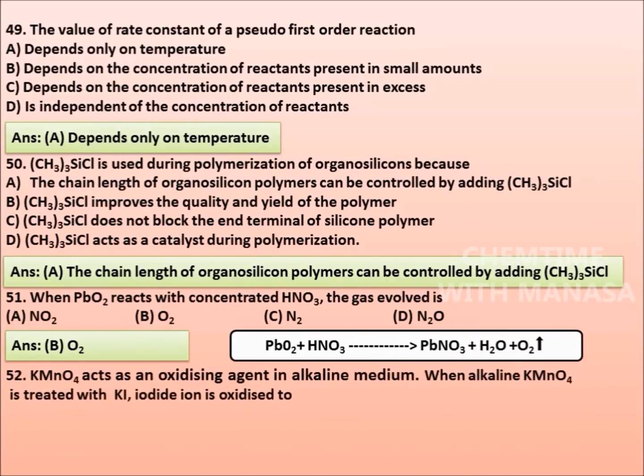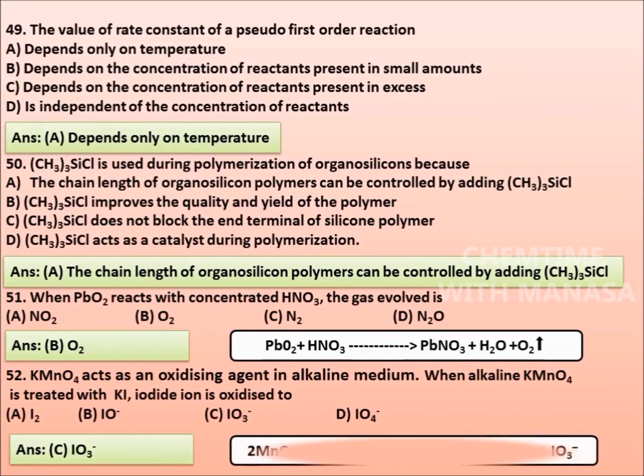Question number 52: KMnO4 acts as an oxidizing agent in alkaline medium. When alkaline KMnO4 is treated with potassium iodide, iodide ion is oxidized to I2, IO-, IO3-, or IO4-. The answer is option C, iodate or IO3-, and the reaction is: 2MnO4- plus H2O plus I- gives 2MnO2 plus 2OH- plus IO3-.